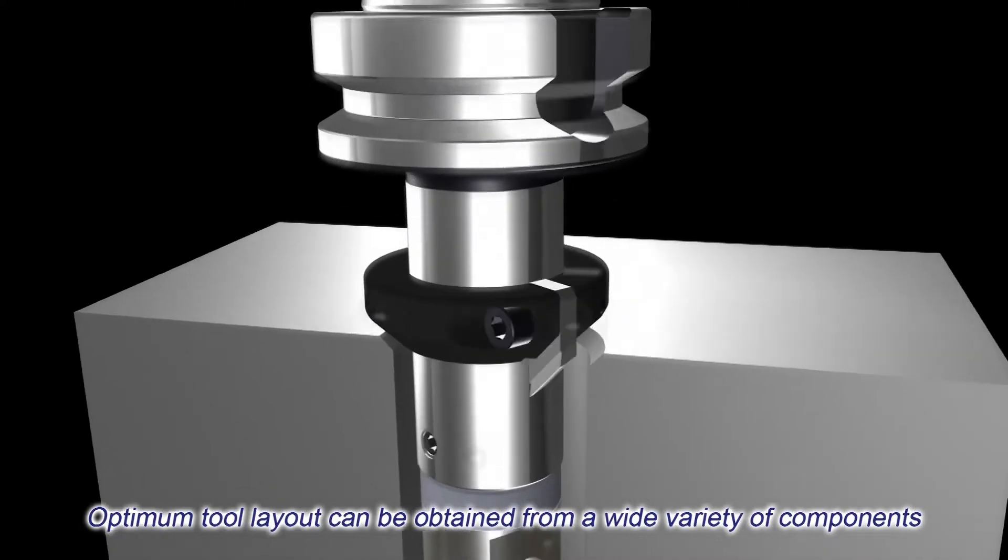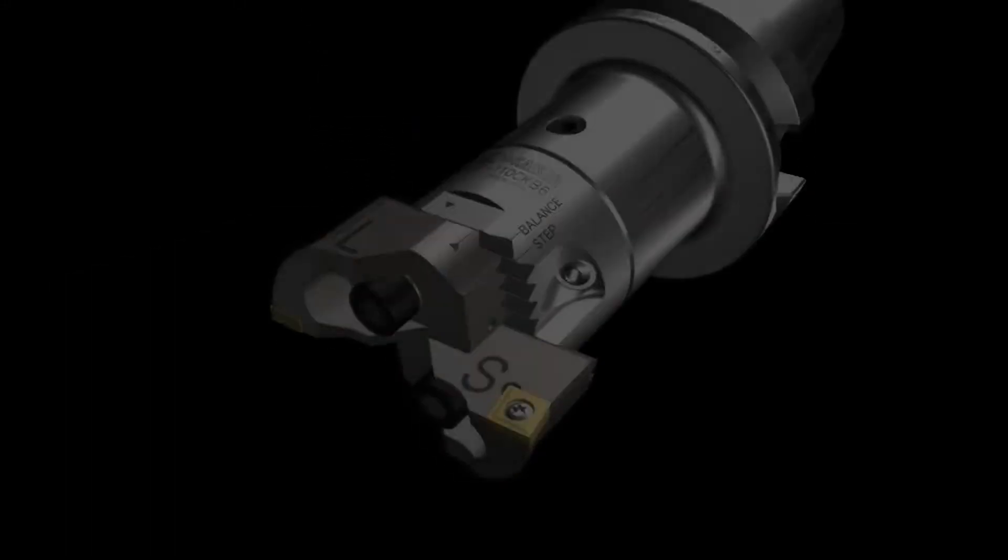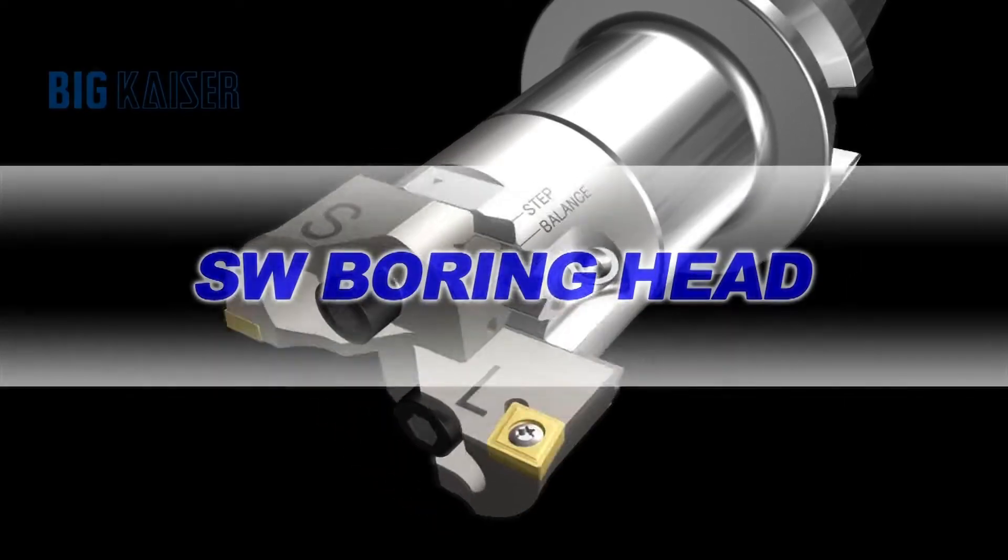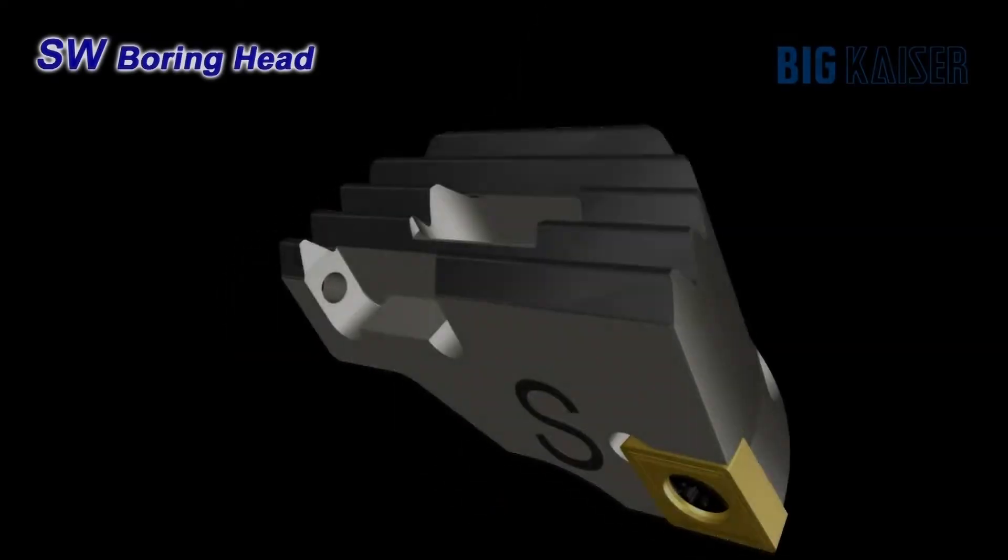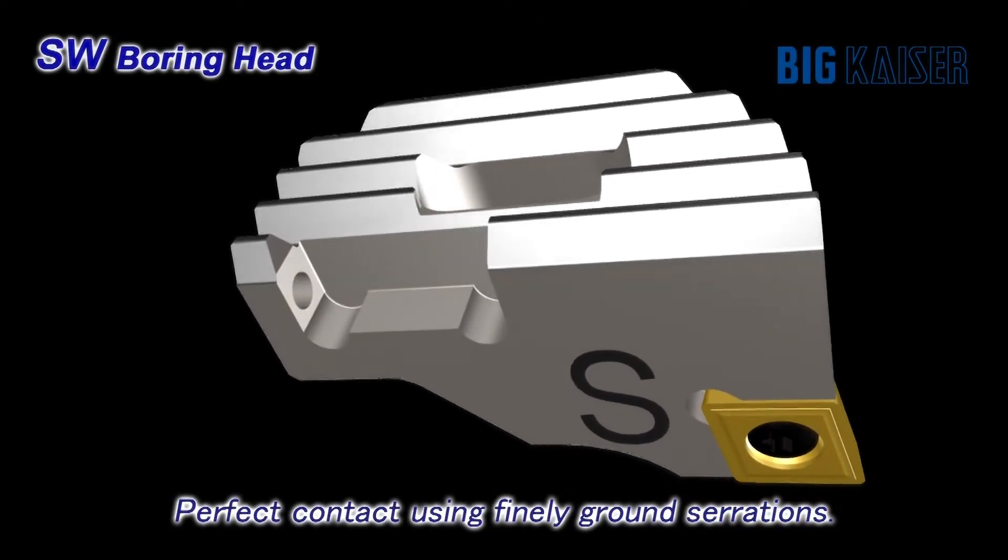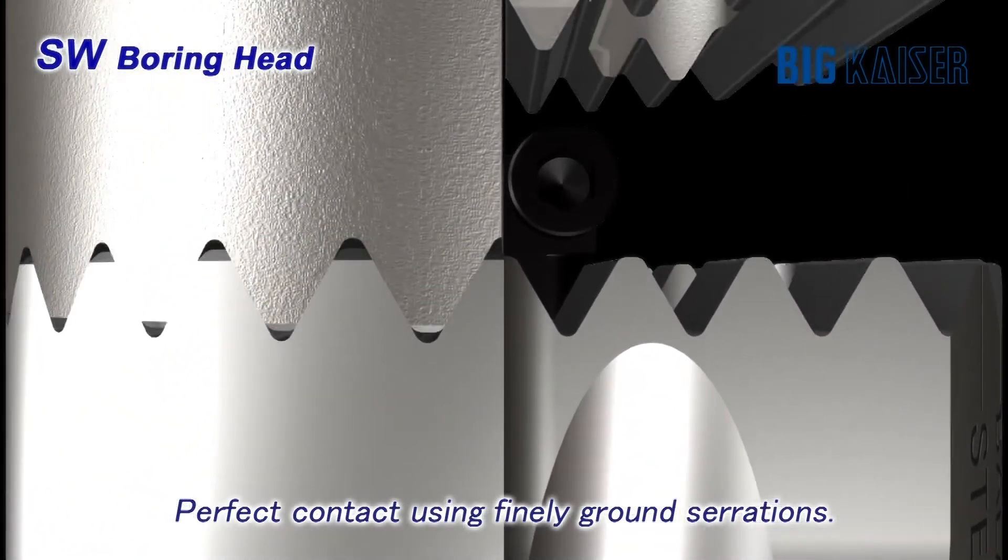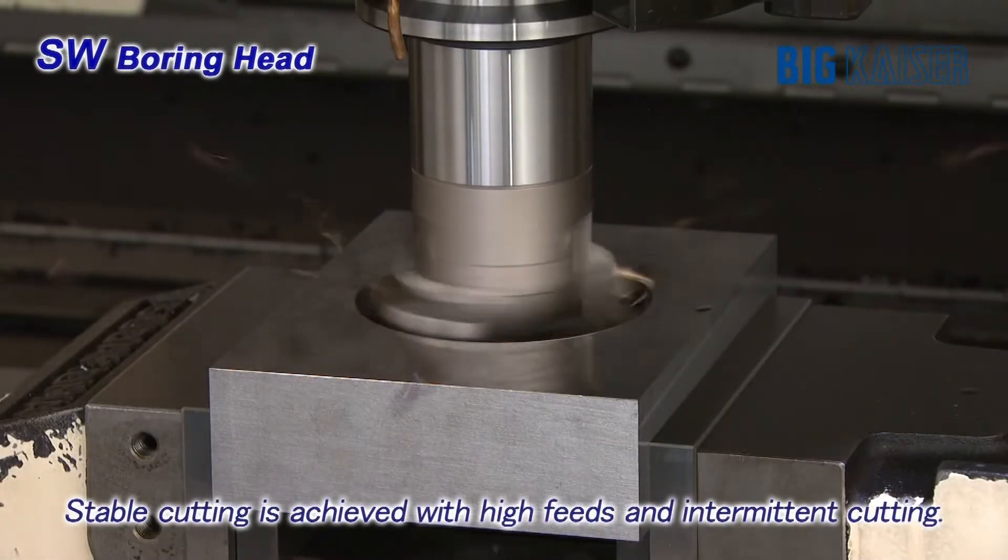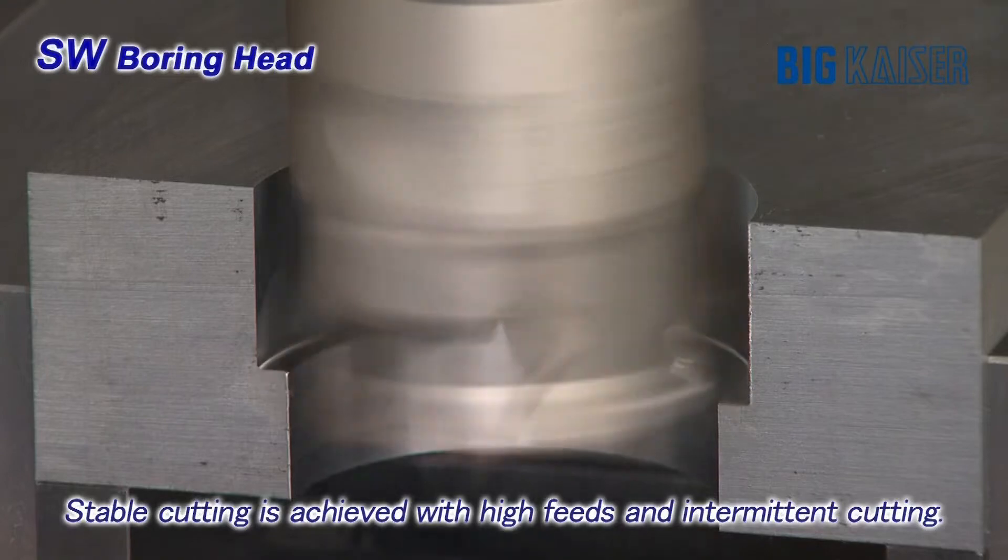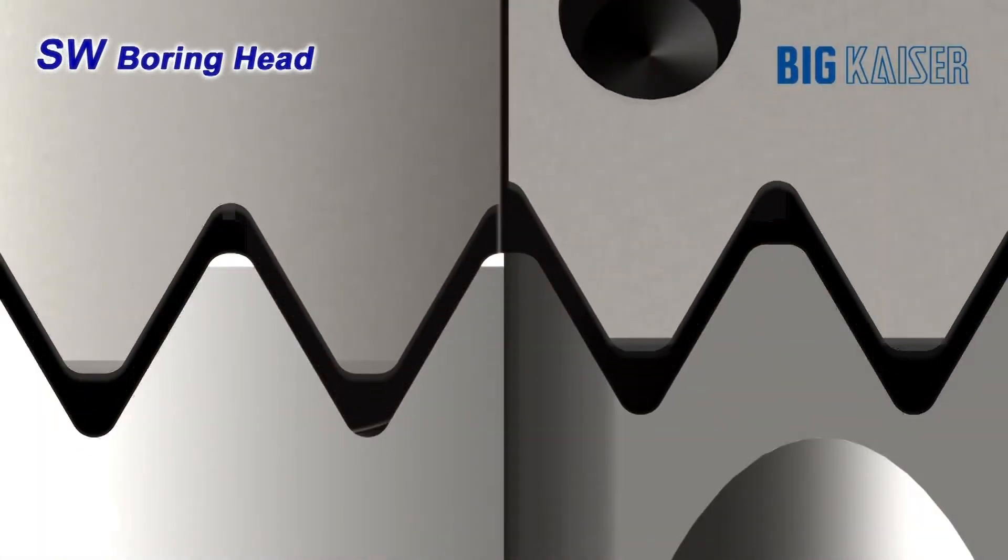SW rough boring series: For the SW head, the rigidity required for rough boring is thoroughly pursued. Large and precision ground serrations offer the perfect connection between the insert holders and the boring head. Stable cutting without chattering can be achieved even with high feed rates and interrupted cutting. No measurable gap exists between the serrations of both the insert holder and the boring head.